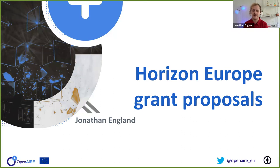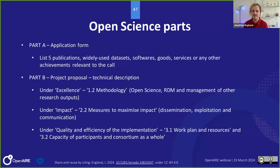Now, taking a step back to the grant proposal stage: what are the Open Science elements you need to cover? In Part A — the application form — you have to list publications and datasets relevant to the call. In Part B — the actual project proposal — under excellence, impact, and quality and efficiency of implementation, you have some elements to address around open science.